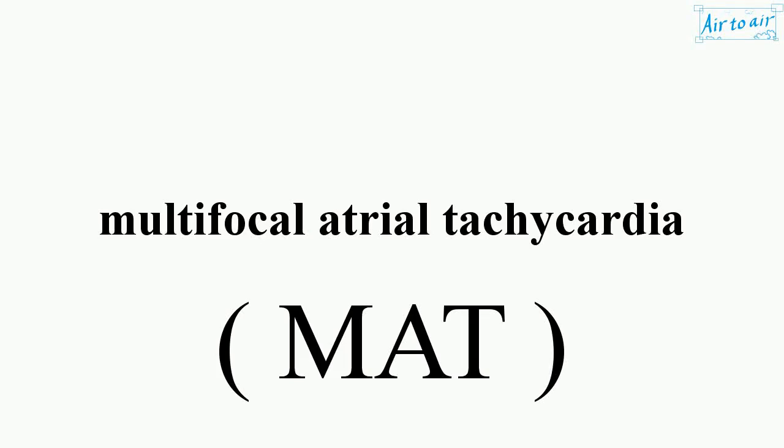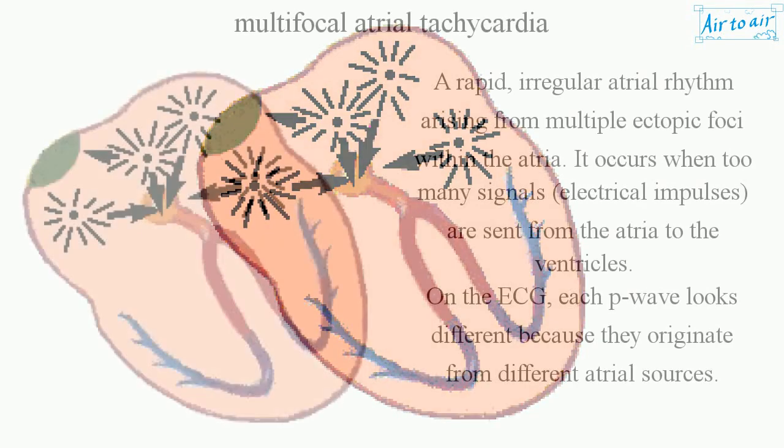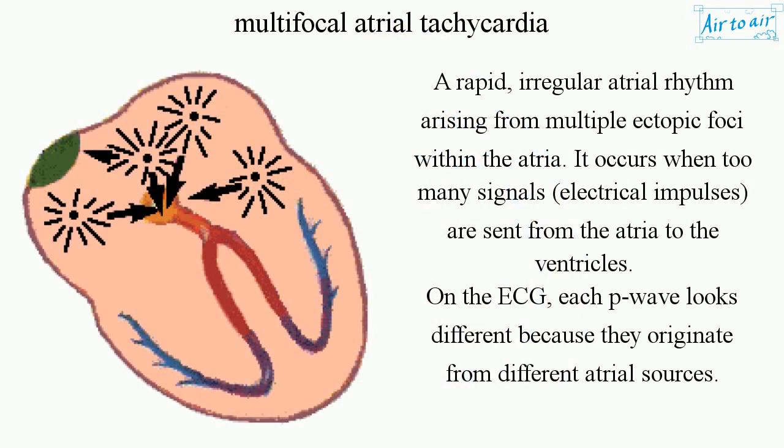Multifocal atrial tachycardia is a rapid, irregular atrial rhythm arising from multiple ectopic foci within the atria. It occurs when too many electrical impulses are sent from the atria to the ventricles. On the ECG, each P-wave looks different because they originate from different atrial sources.